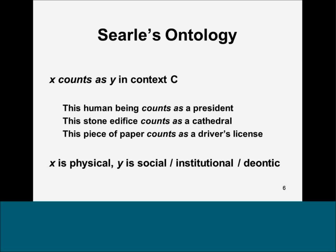We can iterate this formula. So a cathedral may count as a place for performing certain kinds of ceremonies, for instance. We can have Y counting as Z and so forth. But the fundamental X term has to be physical. Otherwise, it's going to be social objects all the way down, and that will be a problem from Searle's point of view.